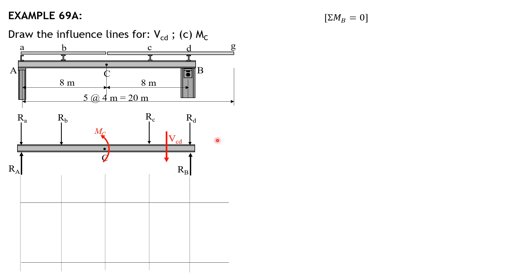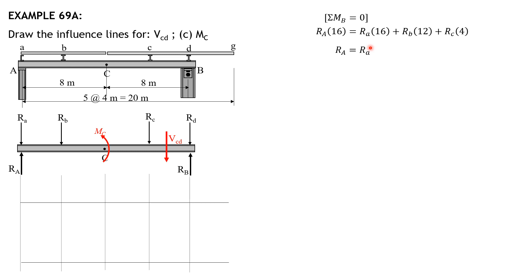Summation of moment about B equals zero to derive R_A. So we have R_A times 16 equals r sub small a times 16 plus r sub small b times 12 plus r sub c times 4. R_D has zero moment arm. Dividing everything by 16, R sub A equals r sub small a plus three-fourths of r sub small b plus one-fourth of r sub small c.